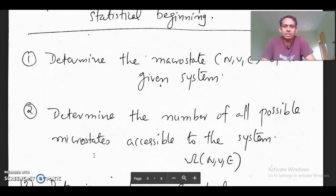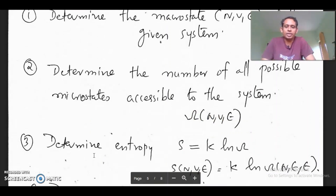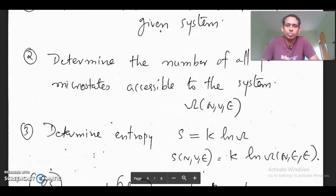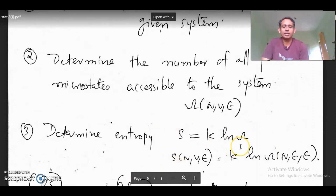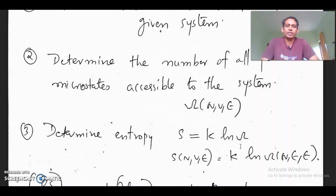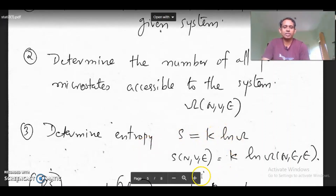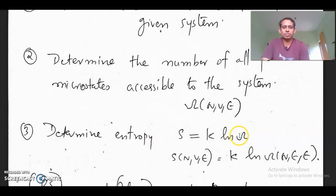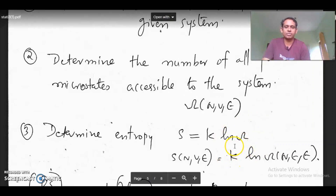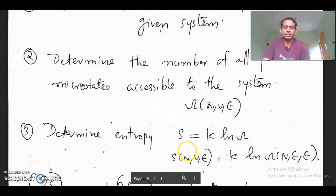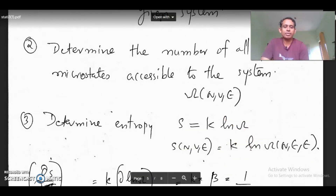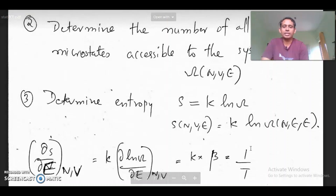Once omega is determined, we determine the entropy. Entropy is S equal to k log omega — the Boltzmann equation, where k is the Boltzmann constant. Once we have omega, we can very easily calculate the entropy for the system, and that is the third step.